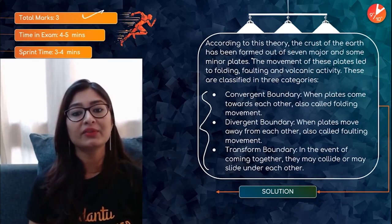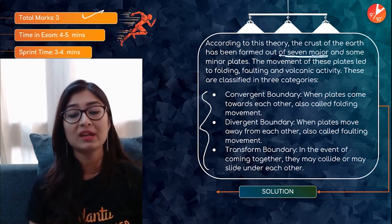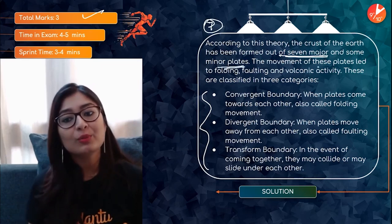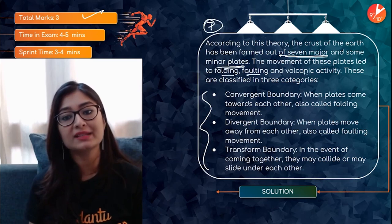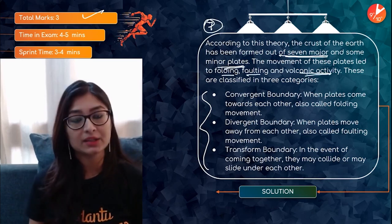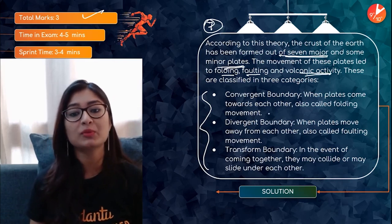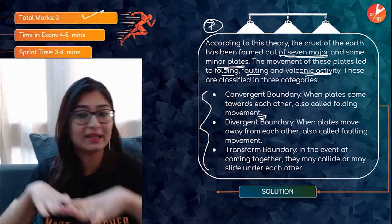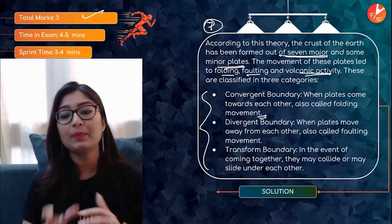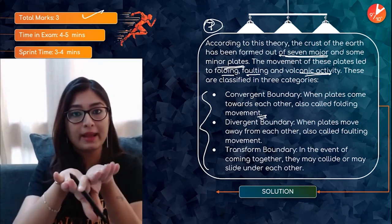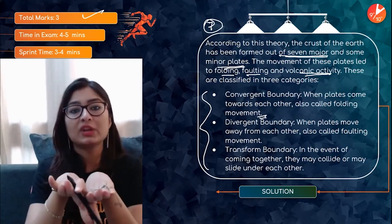According to this theory, the crust of the Earth has been formed out of seven major plates and minor plates. When plates come towards each other it is called a convergent boundary, also associated with folding movements. When plates move away from each other it is called a divergent boundary, associated with faulting movement.